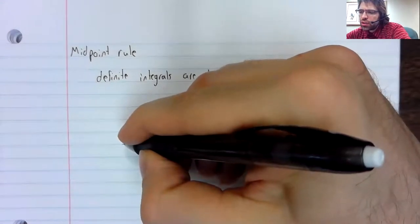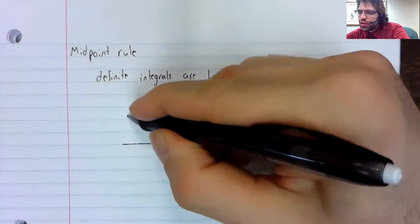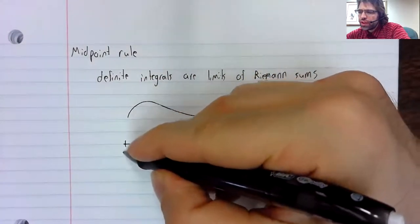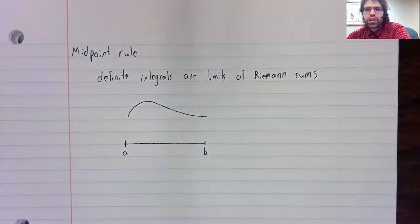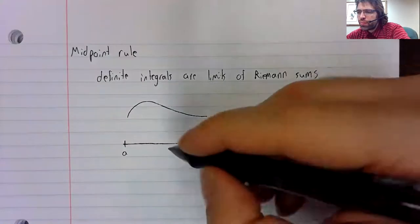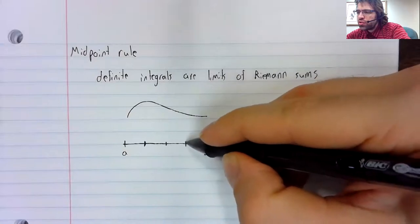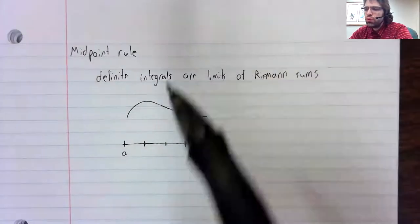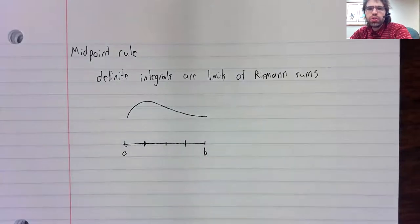Let's remind ourselves of what a Riemann sum is. We've got a curve, we've got an interval that we're looking at, and we're trying to estimate the area under the curve. We break this interval into smaller pieces. For the purposes of the midpoint rule, let's assume these pieces are all of equal length.